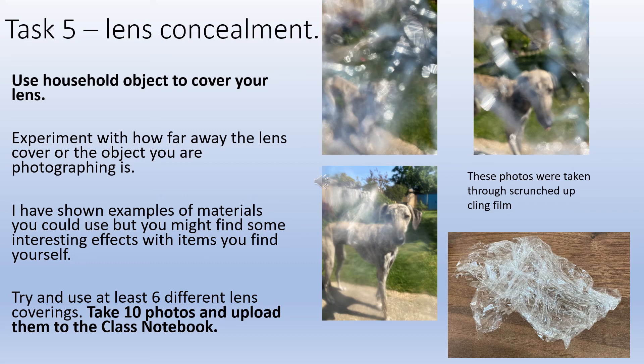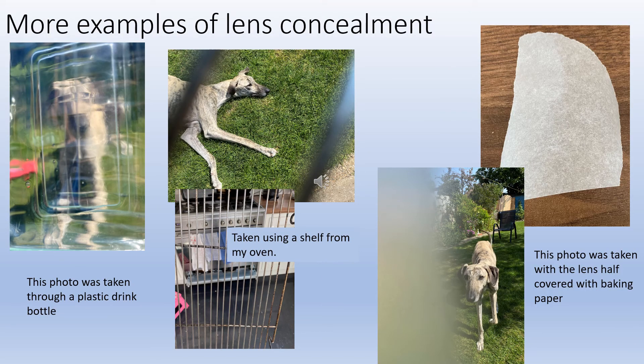Task five is to attempt to conceal your lens in a way that will still allow you to take a photo. I've got a few examples over the next couple of slides, and I've chosen to use the same subject matter — photos of my dog in different ways. Try using things like cling film, see-through sweet wrappers, or food wrappers. You don't only have to use see-through objects; you could use things that actually hide part of the picture. For example, I've used the shelf in my oven and baking paper, which creates a lot of blur but also picks up the colours in the picture.